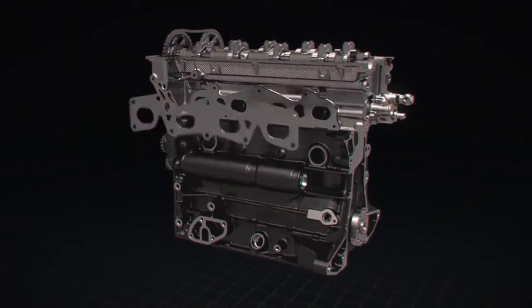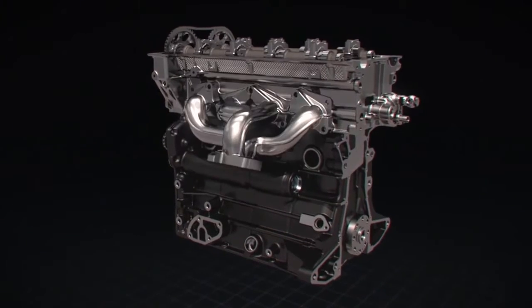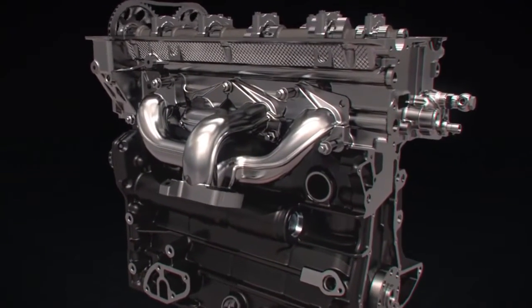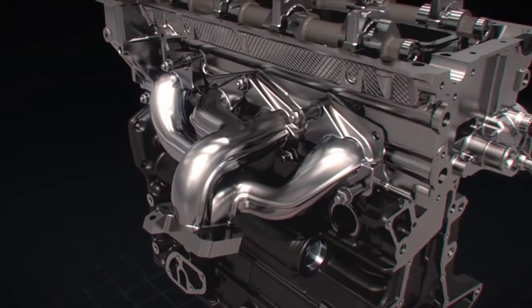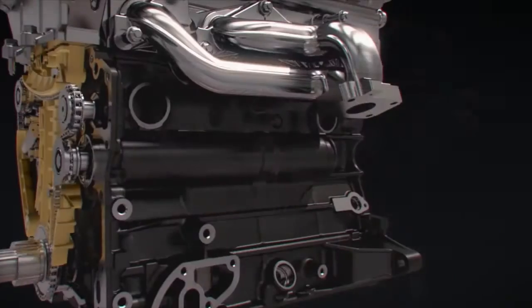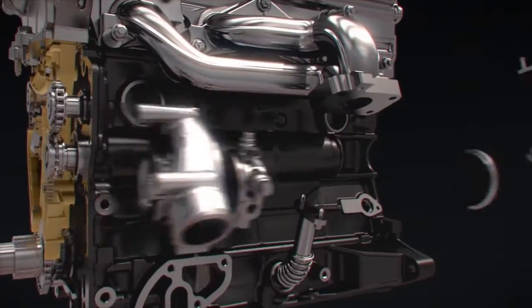The exhaust manifold is of a structural form of pulse pressure charging and the internal flow channel is of a variable cross section which can rationally organize exhaust gas flow and improve the utilization rate of exhaust energy.